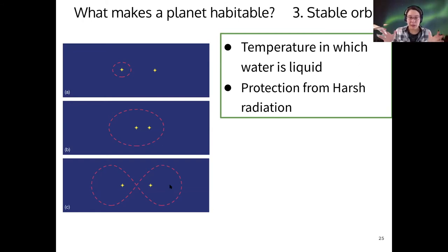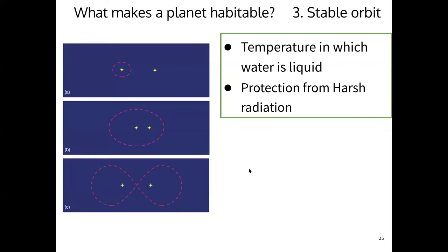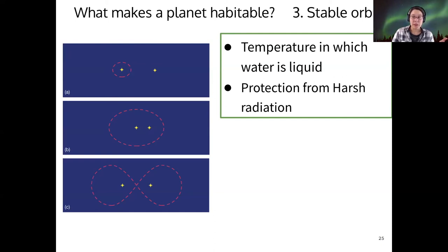You could be gravitationally perturbed and possibly be flung off into space or have your orbit moved. If your orbit moves, like the orbital distance moves while life is evolving, well, conditions have now changed. So now life either has to adjust or maybe it gets wiped out. All right, so those are a few factors for habitable planets.